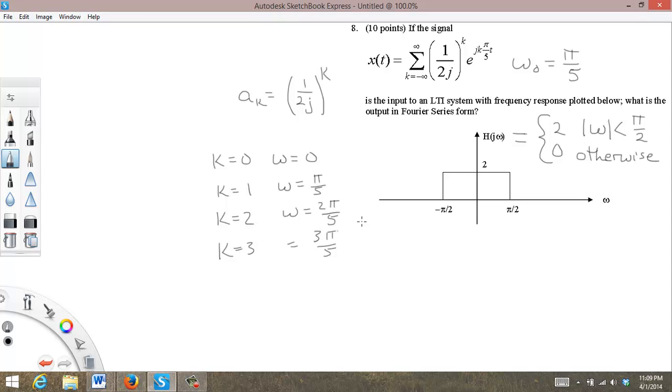This is 0.6 pi. This is 0.5. So 3 pi over 5 is out here.